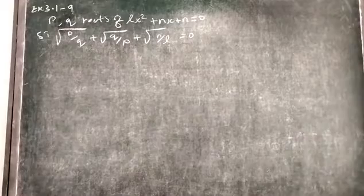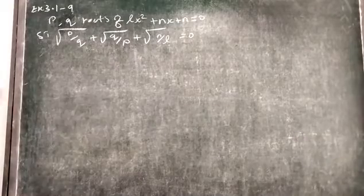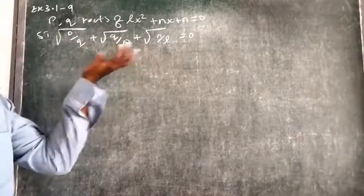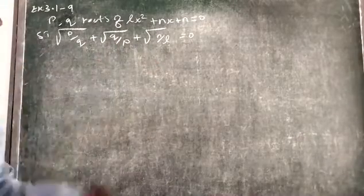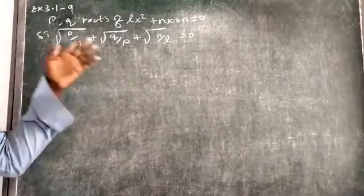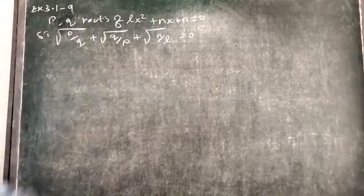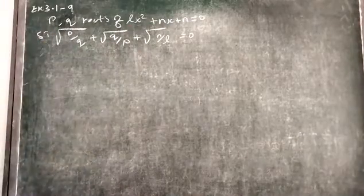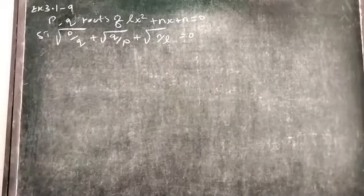In this video, we are going to discuss finding the value of the entire term equal to 0. To prove that, what they are given: B and Q are roots of the quadratic equation LX squared plus NX plus N.